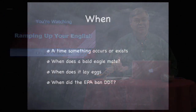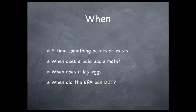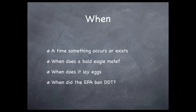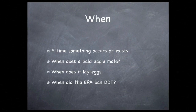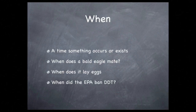Now, the next interrogative on the list is when. It also is specific — when refers to the time something occurred or existed. Think of your animal's life cycle. The information may answer the question: when does it mate, or when does it reach maturity? It could also refer to the conservation status — when did the EPA ban DDT?